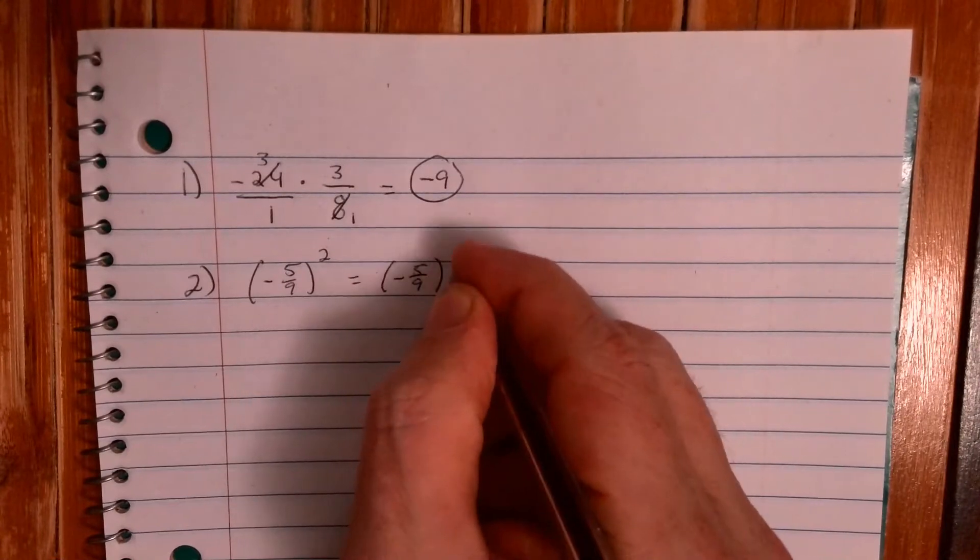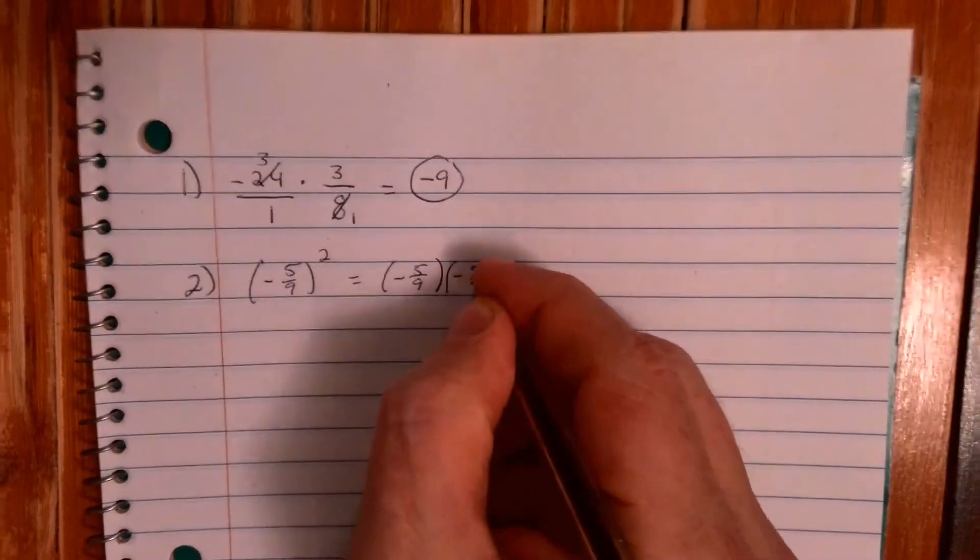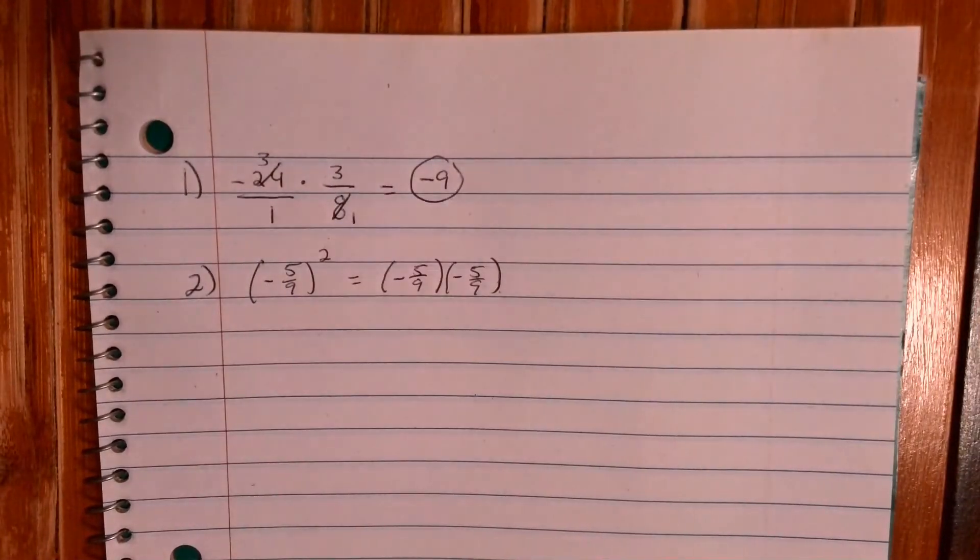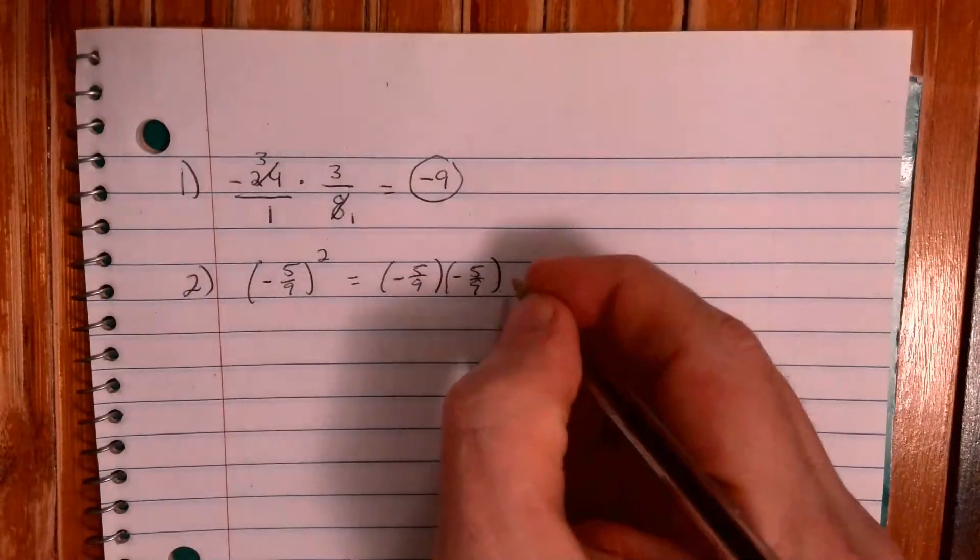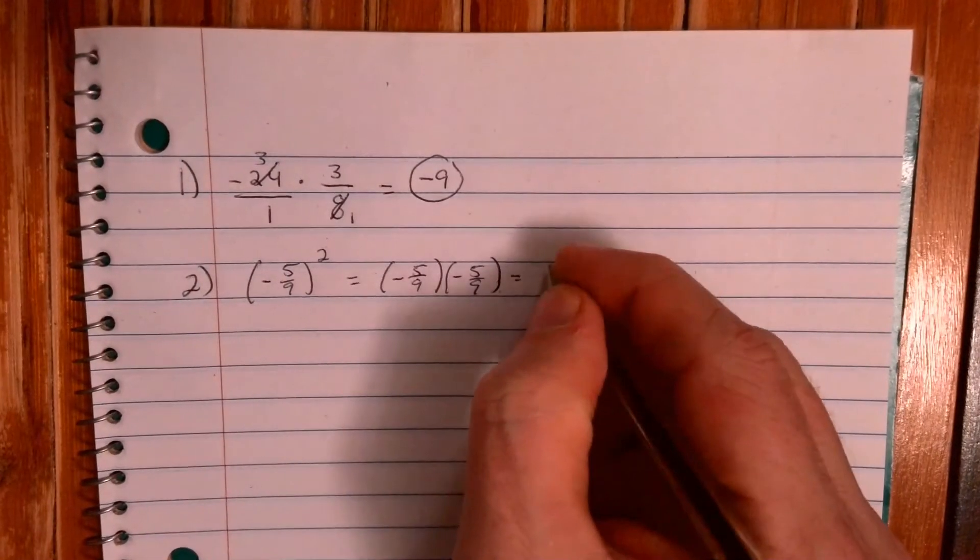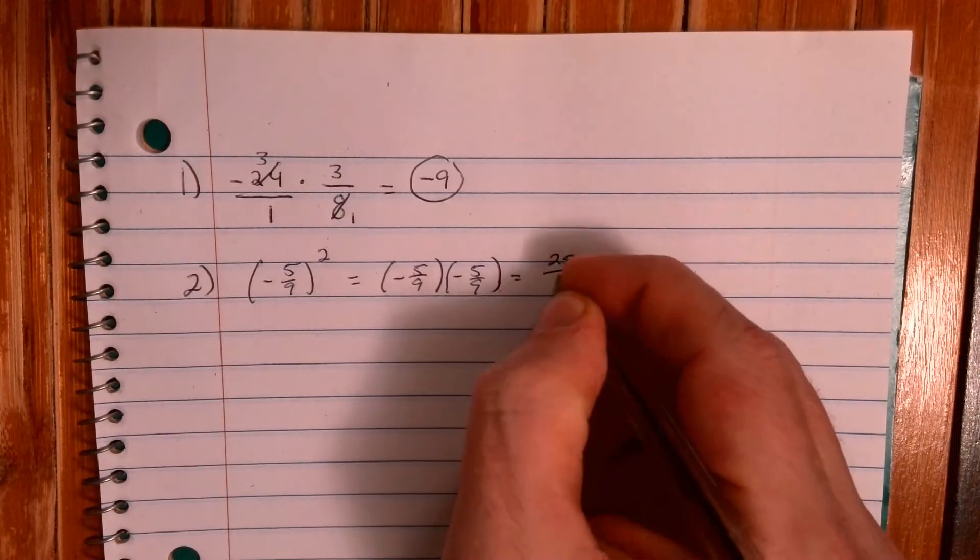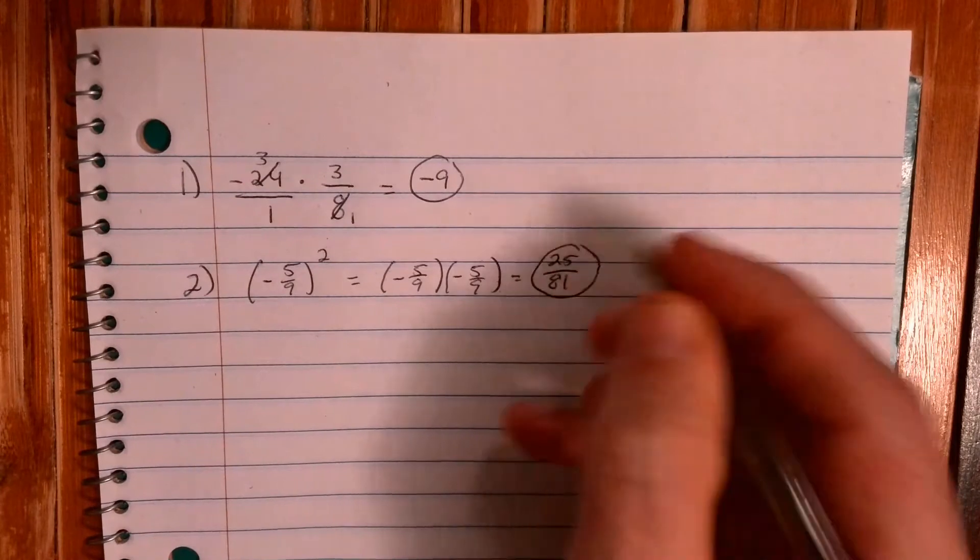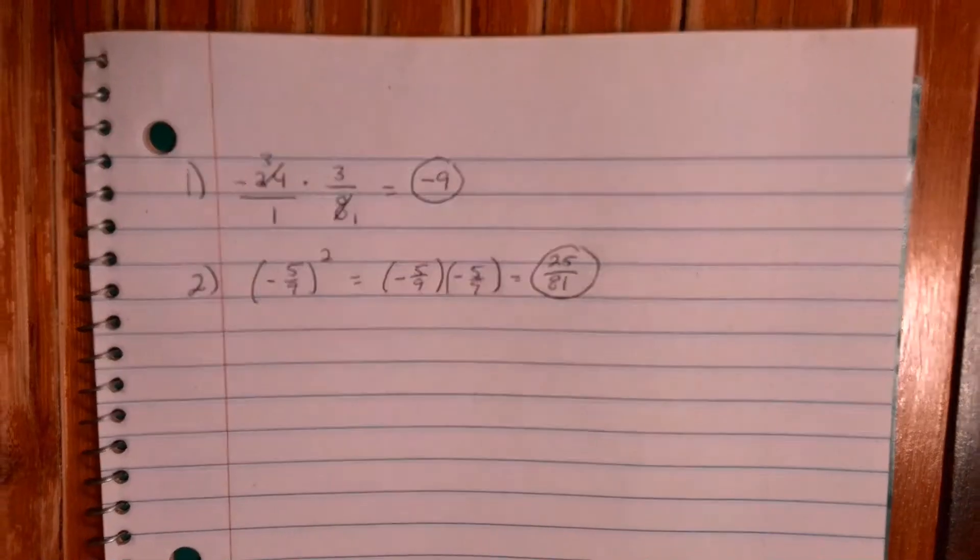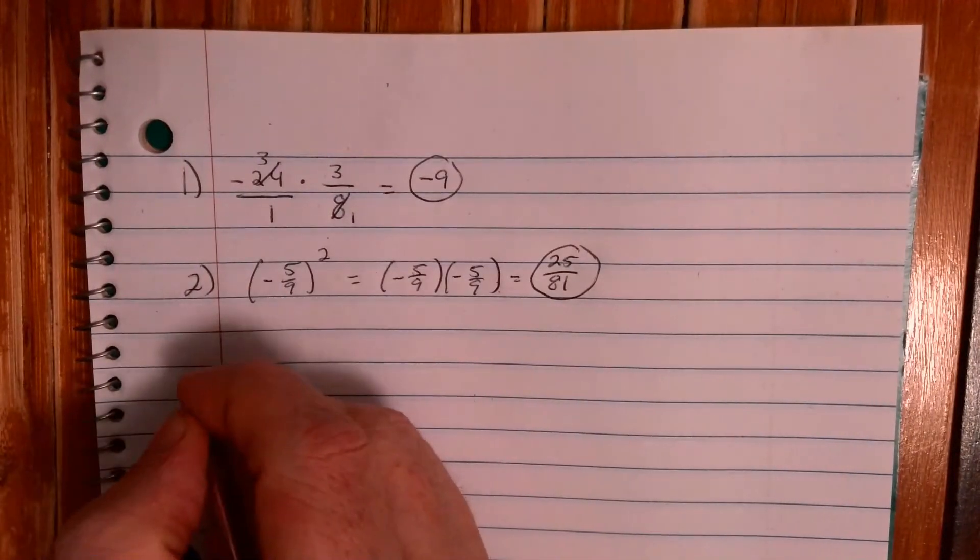Because that's what the exponent does, it tells negative five-ninths to multiply by itself twice. And two negatives make a positive, and 25 squared or five times five is 25, 9 times 9 is 81. 25 over 81. Okay, there's your second one.